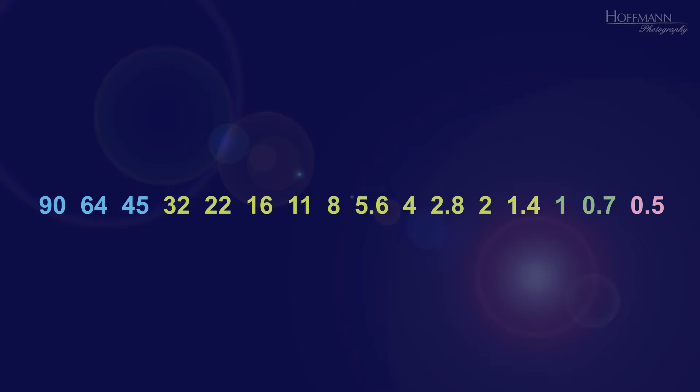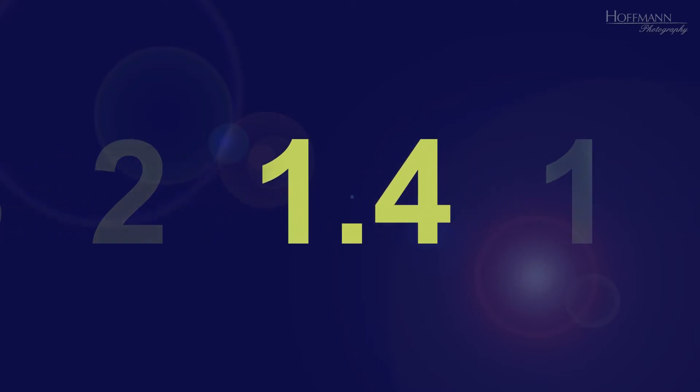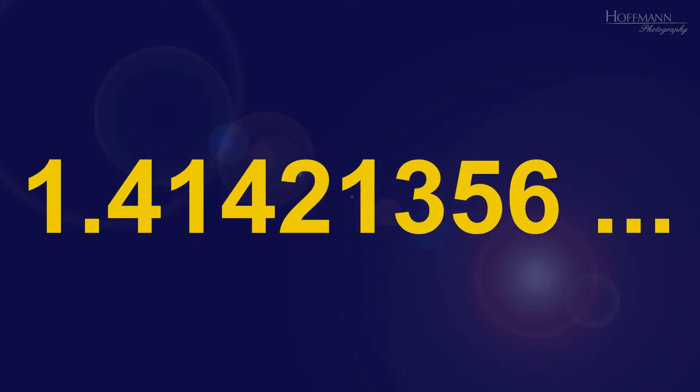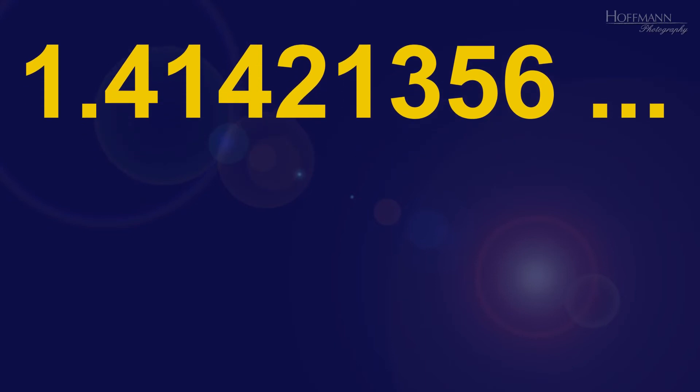But let's take a closer look at one of the f-stops, f1.4. This f-stop is very informative for understanding f-stops in general. f1.4 is not quite complete. If we look closely, there are an infinite number of decimal places. And no, this is not pi, but the square root of 2.